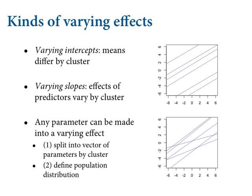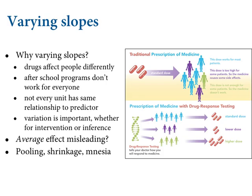We want to do this quite often — let the data tell us how much variation there is — but we want to use partial pooling because we don't want to overfit each cluster. Same kind of story. There are lots of domain-specific scientific reasons to consider varying slopes.